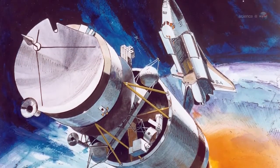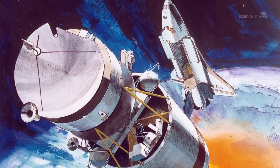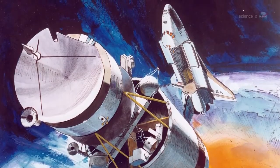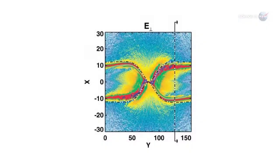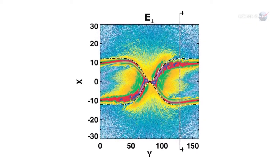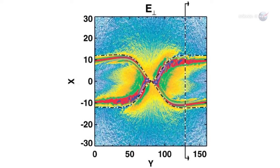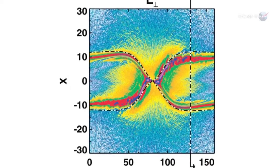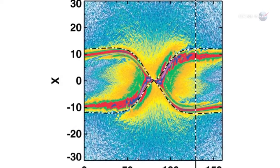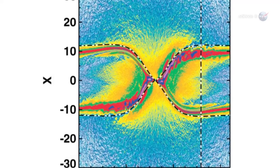Because Polar carried sensors similar to those of MMS, Scudder decided to see how an X-point looked to Polar. Using polar data, we have found five simple combinations of magnetic field and energetic particle measurements that tell us when we've come across an X-point or an electron diffusion region.